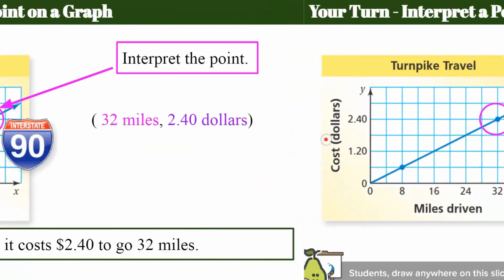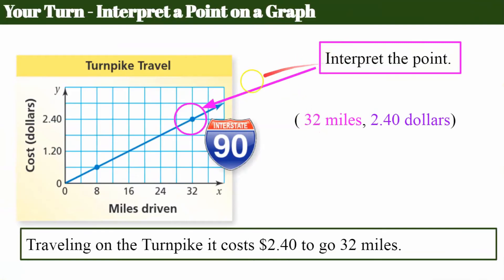Welcome back. So interpreting this point, first I need to identify the location of that point. So I go over to 32. Remember you start at (0,0). I go to the right to 32. That's my x-coordinate. And then my y-coordinate is 2.40.